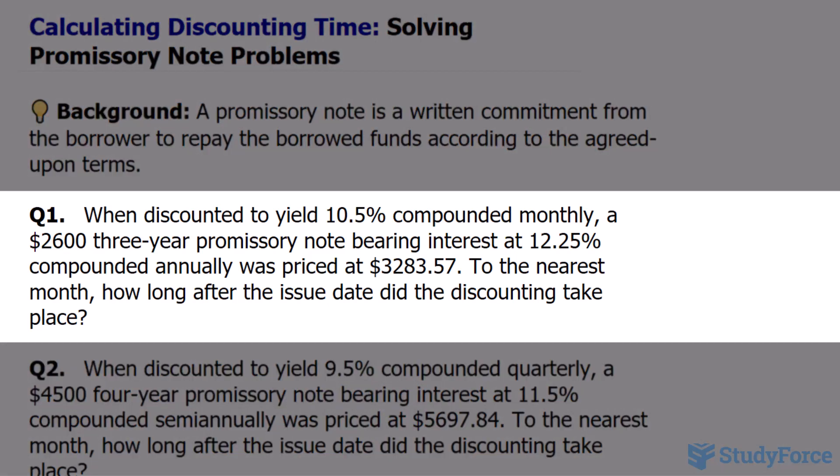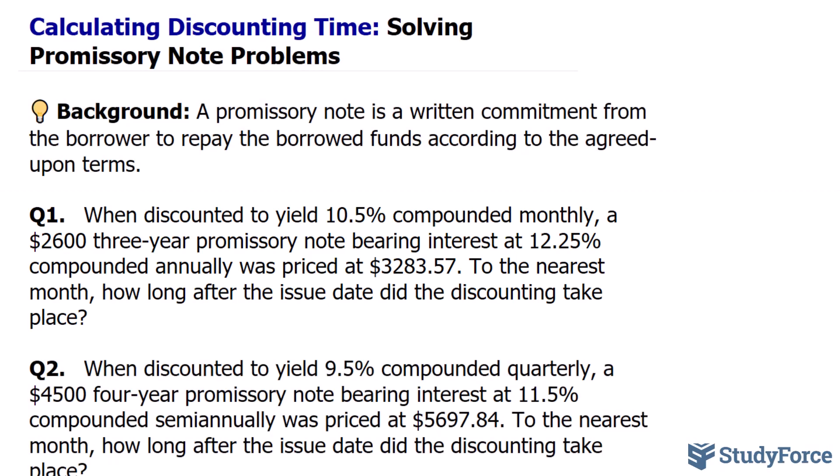The first question reads: When discounted to yield 10.5% compounded monthly, a $2,600 three-year promissory note bearing interest at 12.25% compounded annually was priced at $3,283.57. To the nearest month, how long after the issue date did the discounting take place?